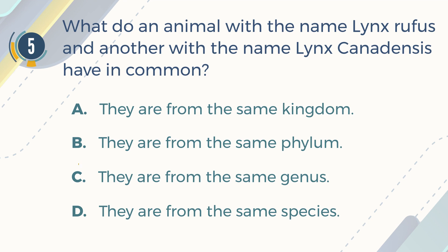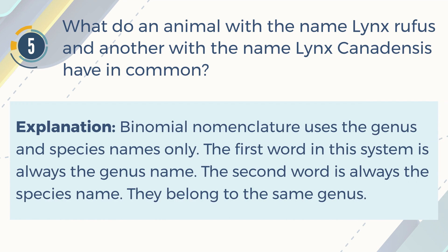The correct answer is C. They are from the same genus. Explanation: Binomial nomenclature uses the genus and species names only. The first word in this system is always the genus name. The second word is always the species name. They belong to the same genus.